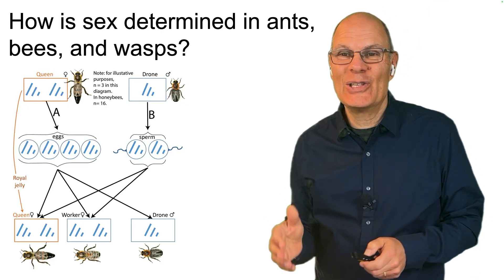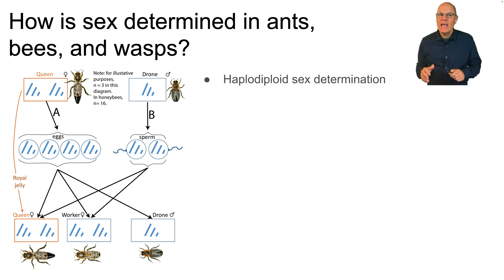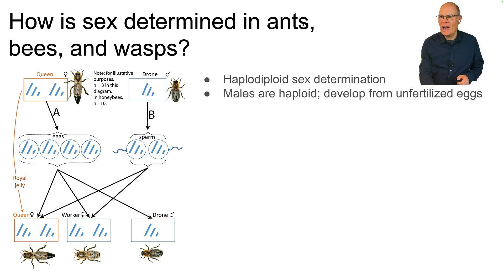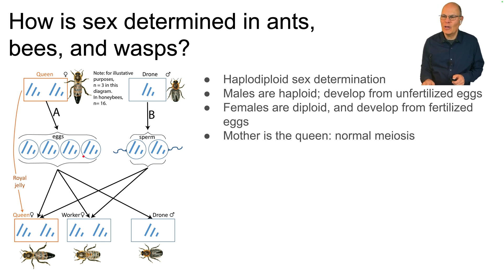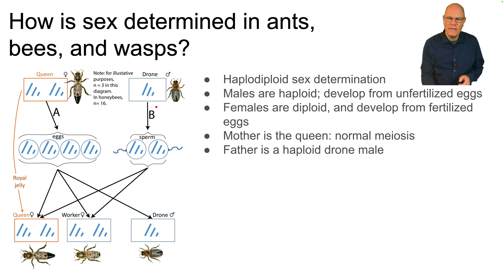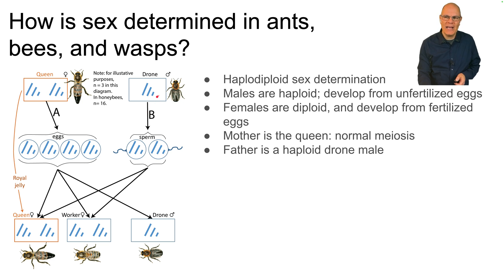How is sex determined in ants, bees, and wasps? This is completely mind-blowing. It's a system called haplodiploid sex determination, or haplodiploidy. The males are haploid — they develop from unfertilized eggs. The females, which include the queen and all of the workers, are all diploid and develop from fertilized eggs. In a bee colony, the queen undergoes normal meiosis to create her eggs. But the father is a haploid male, also called a drone, and he can't really do meiosis because he's haploid — so he passes on 100% of his chromosomes in the sperm he creates.